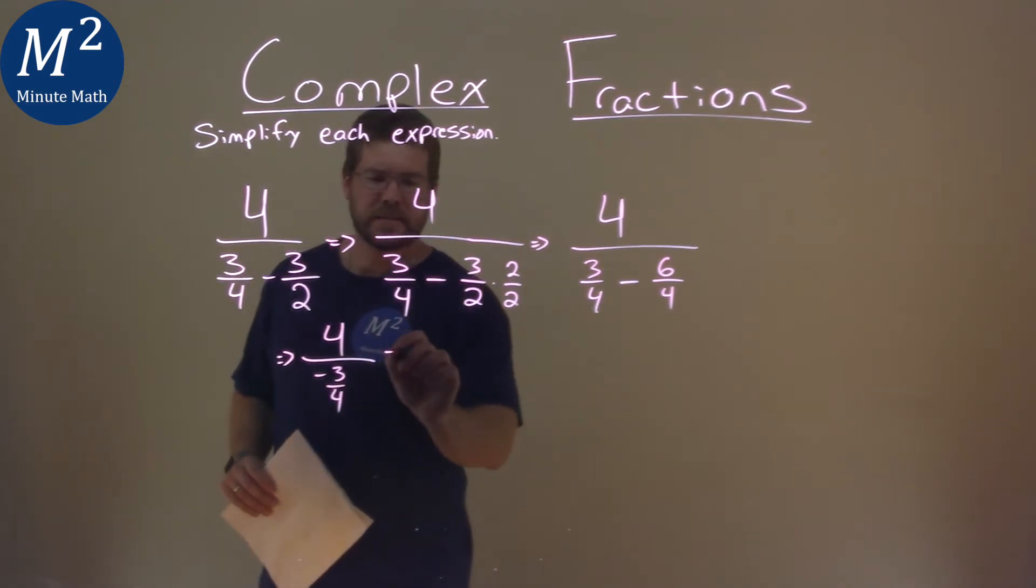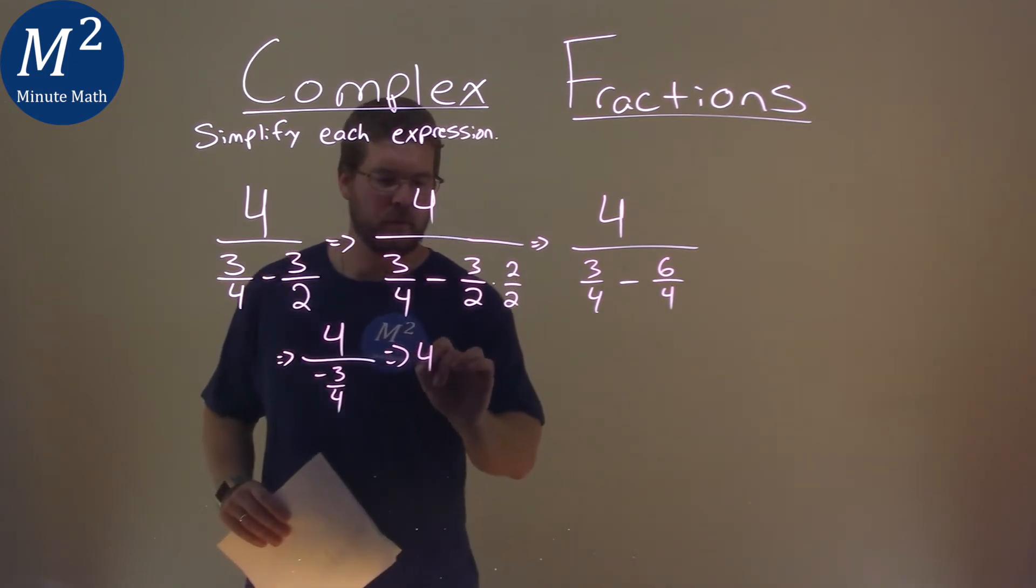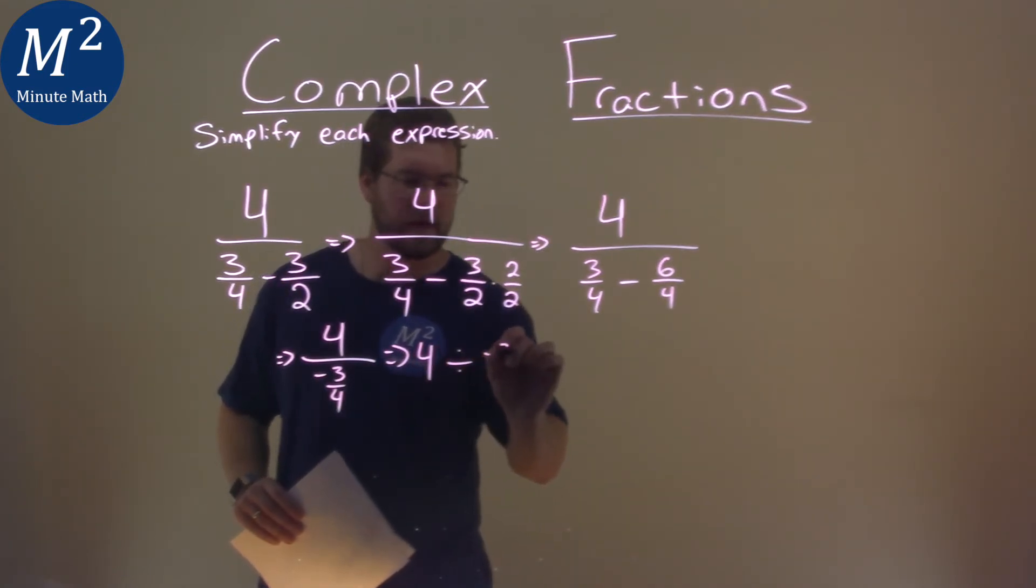Now, I like to see this big division as such, 4 divided by a negative 3 fourths.